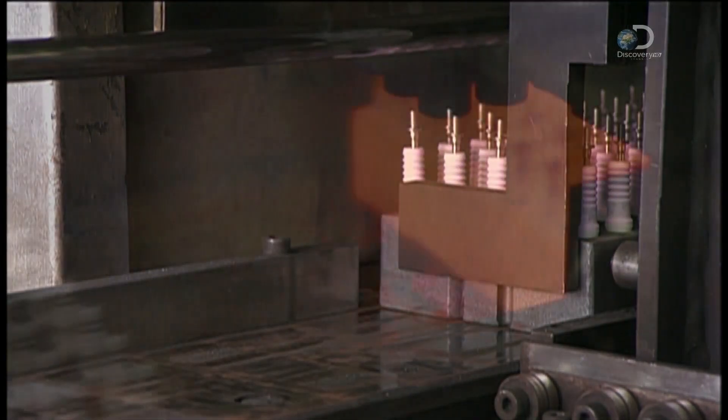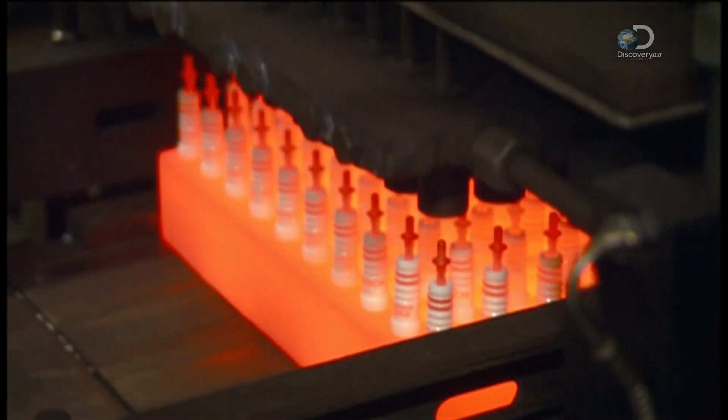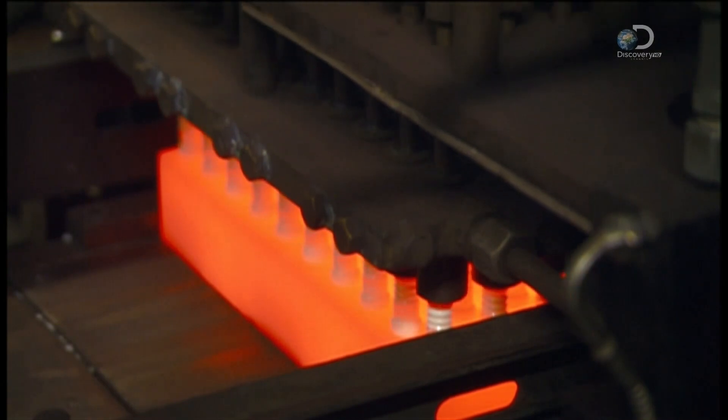The insulators now go into an oven. The black powder melts around the studs and center electrodes to seal them inside the insulator cavity.